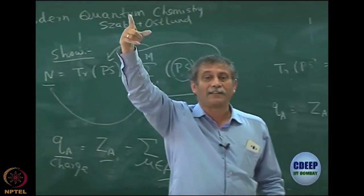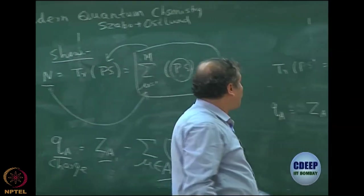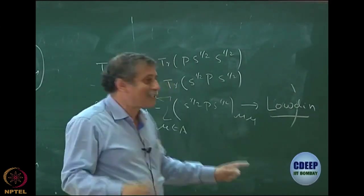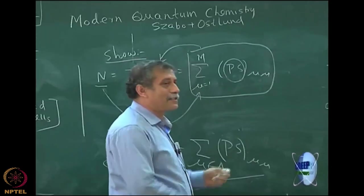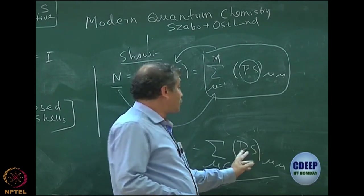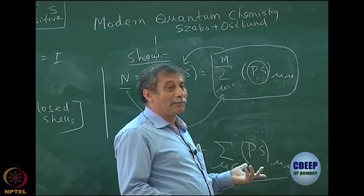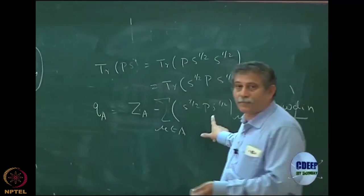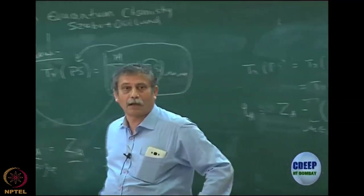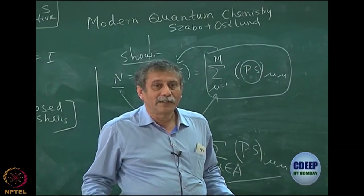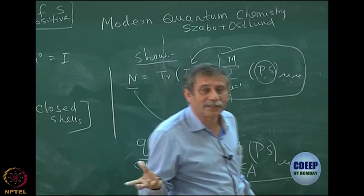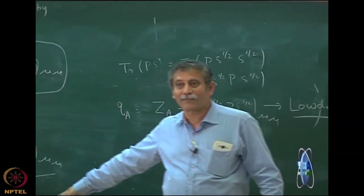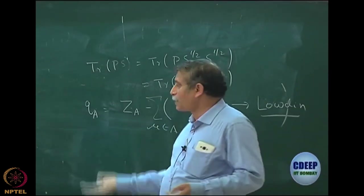Löwdin population analysis is very popular as well, just like Löwdin orthogonalization. Löwdin did S^(1/2)PS^(1/2) — Löwdin likes everything symmetric. This is symmetric. Mulliken's PS is unsymmetric — why should S go only on one side? The trace of PS equals the trace of SP — both are invariant — but the partial sums are not equal. The theorem says sum over all is invariant; but here you do not have sum over all, so there is a cancellation and you get a different charge. Trace is invariant; this is not the entire trace — it is a sum over only a selected number — so the theorem of trace invariance under commutation does not apply to the partial sum.